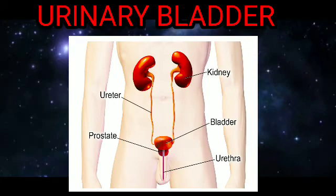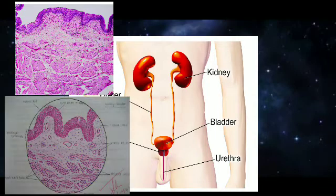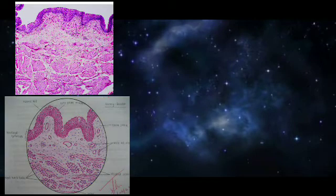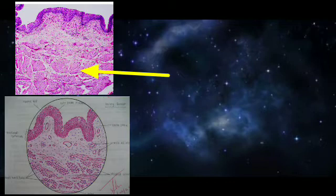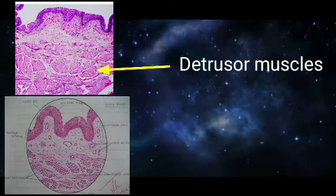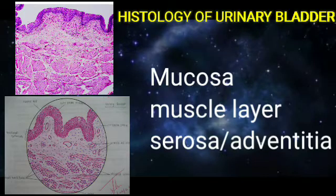The urinary bladder is the muscular bag which acts as reservoir of the urine. The urine formed by the kidneys will be transported through the ureter to the urinary bladder and will be temporarily stored till it is voided through the urethra. The bladder is defined as muscular because the main thickness of the wall is smooth muscles, called detrusor muscles.